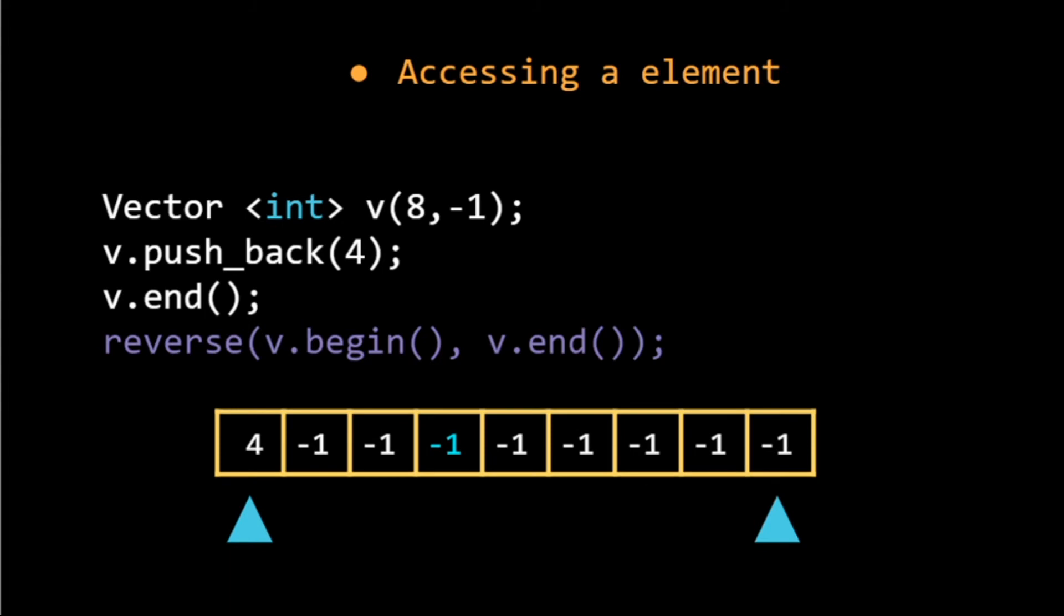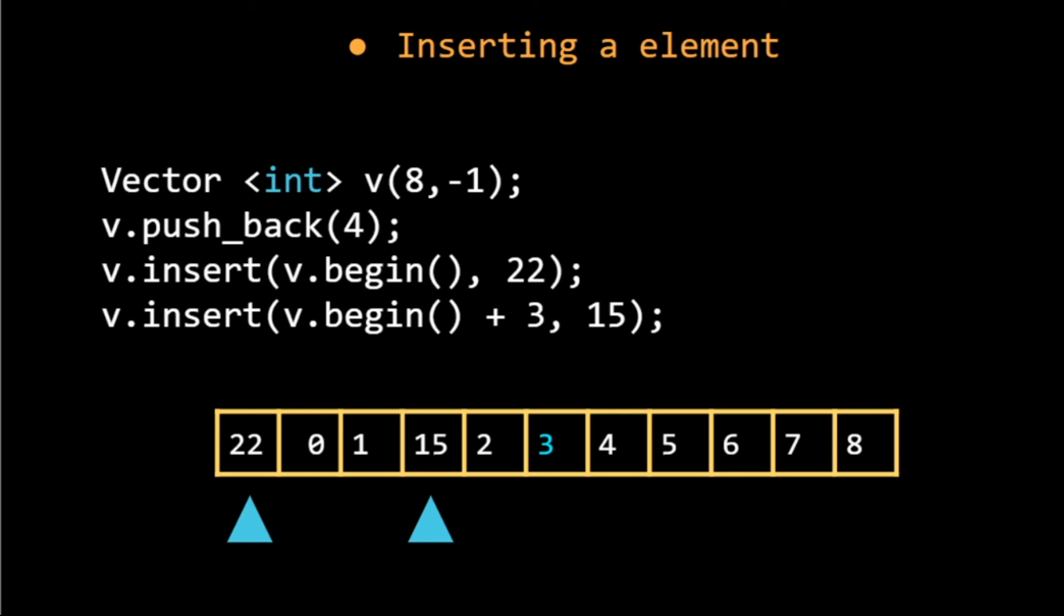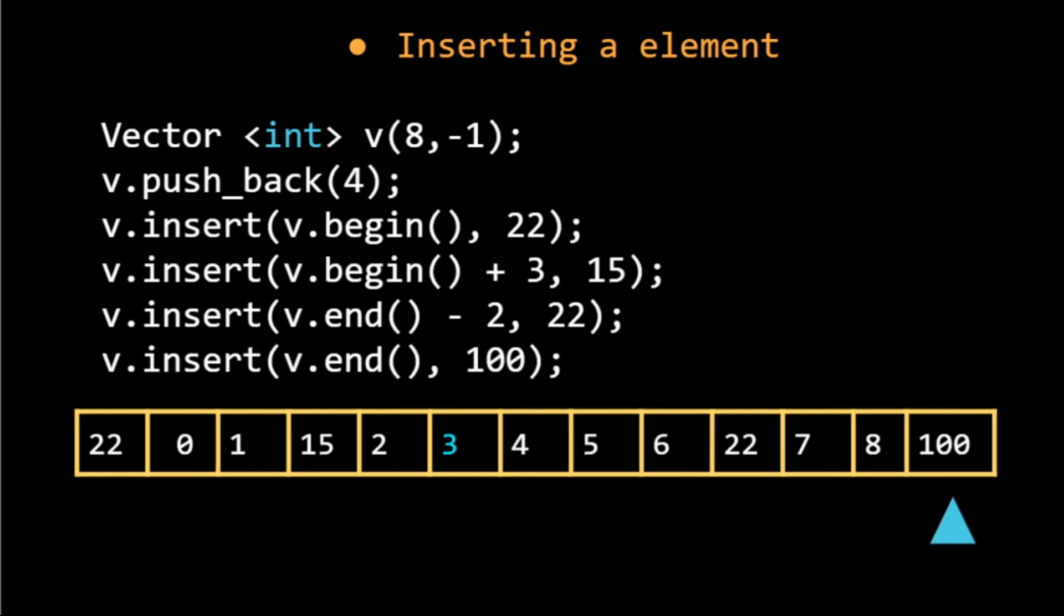Now we know that we can add an element at the end of the vector by push_back, but if we want to add a new element in the middle of the vector we can always use insert. We have to first give the position and then the element. Here we are adding a new element 22 in the beginning of the vector, or we can add a new element 15 at the position that is three units away from the beginning, or we can use end to define the position. For example, here we are adding 22 at the second last position, or here we are adding 100 in the end.